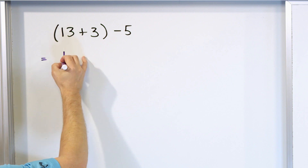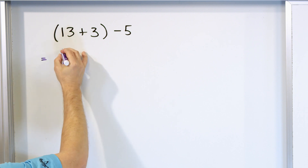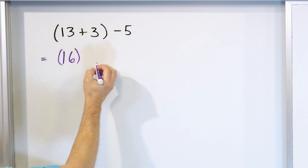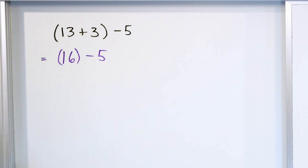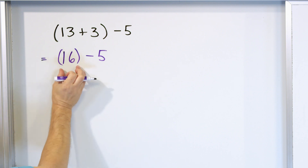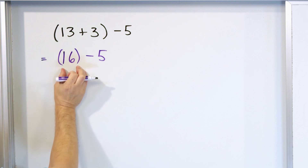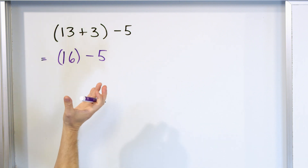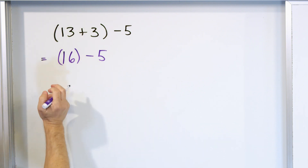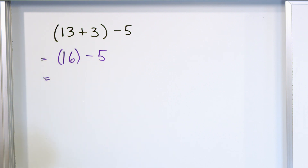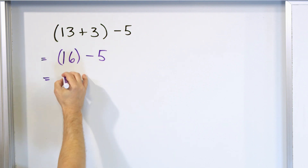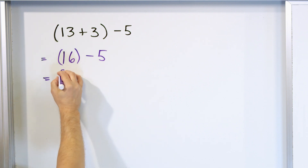13 plus 3 is going to be 16. So we can write that with the parentheses around there. We still have to do the minus 5. Now the parentheses around the 16 don't mean anything anymore because we've already done the operation. So 16 minus 5 is 11.